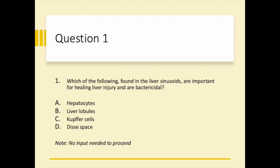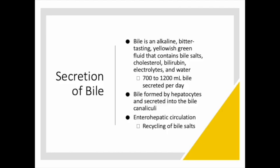Practice question: Which of the following found in liver sinusoids are important for healing liver injury and are bactericidal? The answer is Kupffer cells. Kupffer cells are tissue macrophages that line the sinusoids, part of the mononuclear phagocytic system. They help with healing the liver, are bactericidal, and also help with bilirubin production and lipid metabolism.